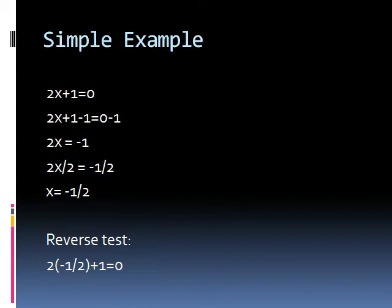So, how do you reverse test this? Well, you can substitute x with the solution that you just found to see if it would equal to 0. If you do that, you could have 2 times minus 1 half plus 1, which would equal to minus 1 plus 1, which equals to 0. This actually would test out that x equals to minus 1 half is a valid solution to this equation.